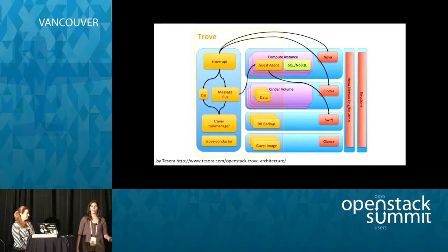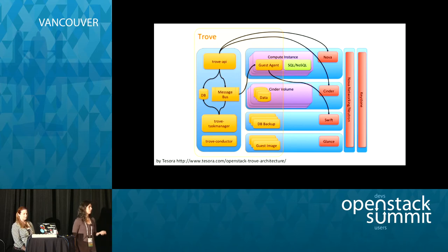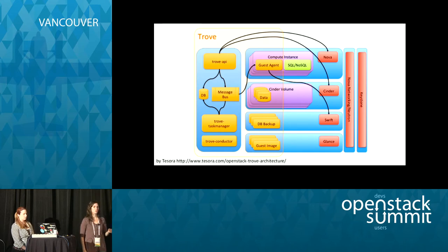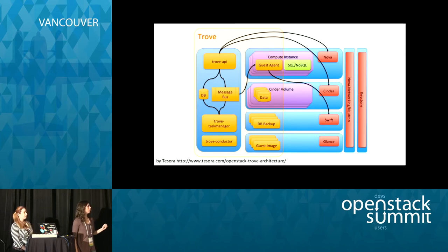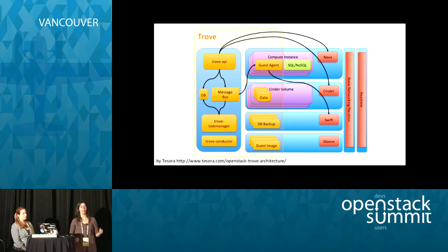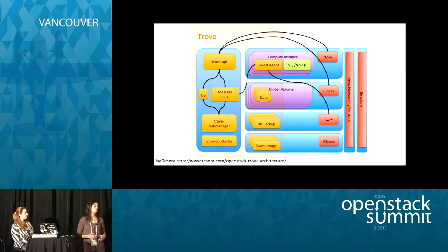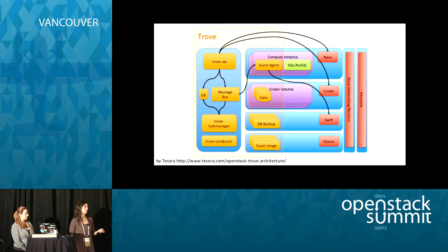Then you have the Trove Task Manager, which is the one that does all the heavy lifting as far as provisioning instances, managing the life cycles of the instances, and issuing commands to the instances. It's also in charge of communicating with the guest agent to start the data store and many other things. Then we have the guest agent, which is a piece of Trove running in the guest and is in charge of communicating with the data store and configuring the data itself. Lastly, we have the Trove Conductor, which runs on the host and is in charge of interacting with the database on the host to keep track of the statuses of the instances being managed by Trove.